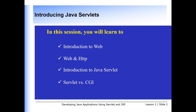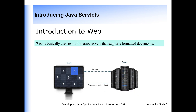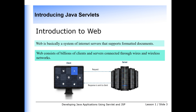First, I will talk about the worldwide web — introduction to web. The web is basically a system of internet servers that supports formatted documents. The documents are formatted using a markup language called HTML (HyperText Markup Language) that supports links to other documents like graphics, audio, and video files. The web consists of billions of clients and servers connected through wired and wireless networks. Clients make requests to a web server, the web server receives the request, finds the resources, and returns the response to the client.